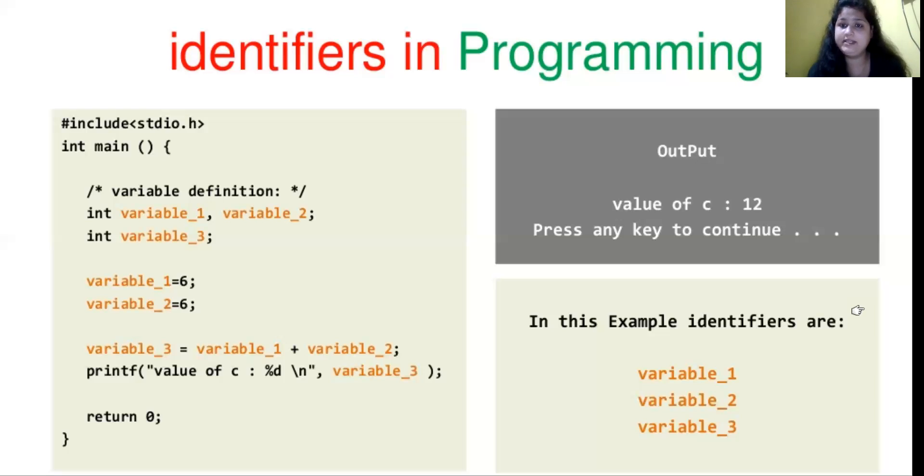In this example, the identifier is variable_1, variable_2 and variable_3. Now, you can take any other identifier, no issue. You can take integer a, integer b, integer c. In this example, a equals 6, b equals 6. Then c equals a plus b. That is the issue.